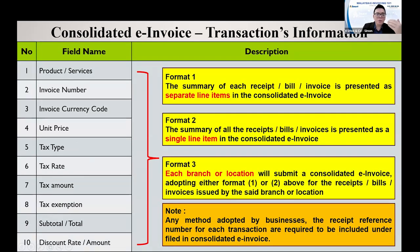How do you submit a consolidated e-invoice to the income tax? There are three formats to select. First, you can summarize each receipt under one item. Second, you combine all invoices under a single item. Third, you submit e-invoice by branch. For example, if you have many branches like KL branch, Cheras branch, or PJ branch, you can combine them all and submit one consolidated e-invoice, or separately submit a consolidated e-invoice per branch.